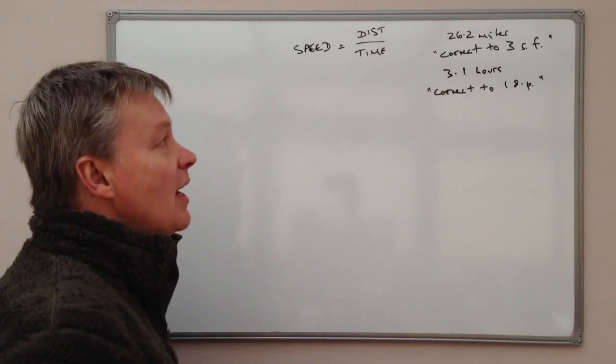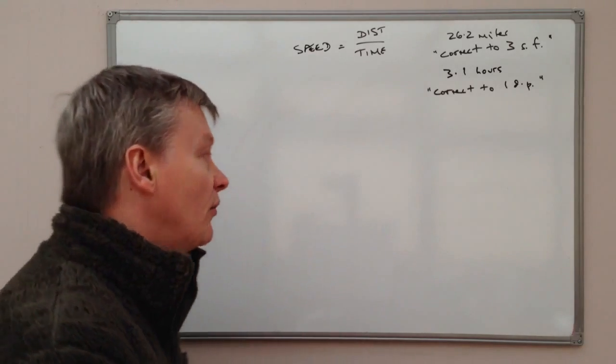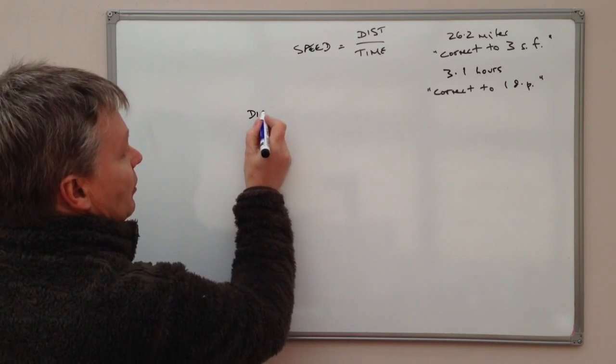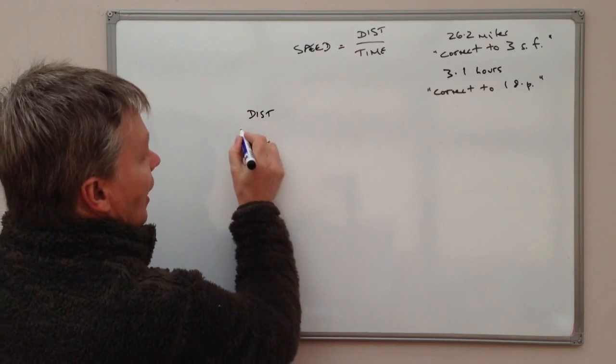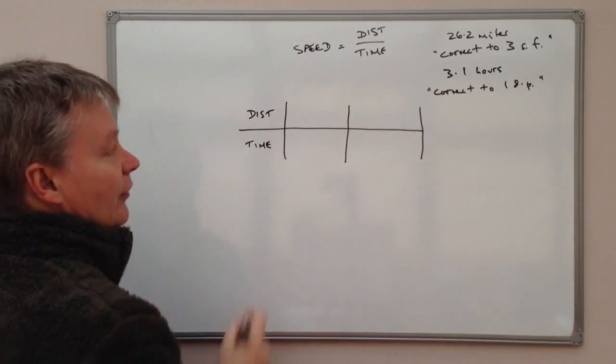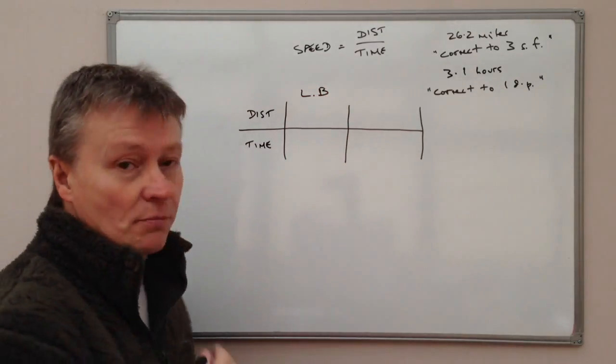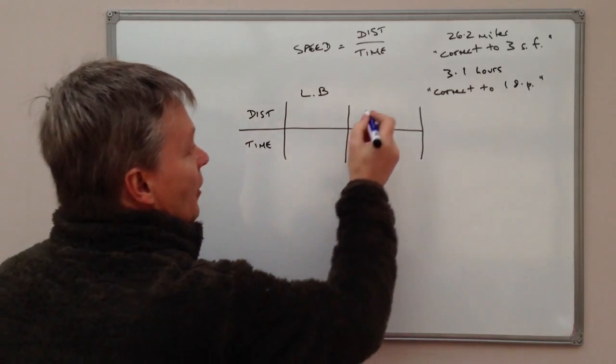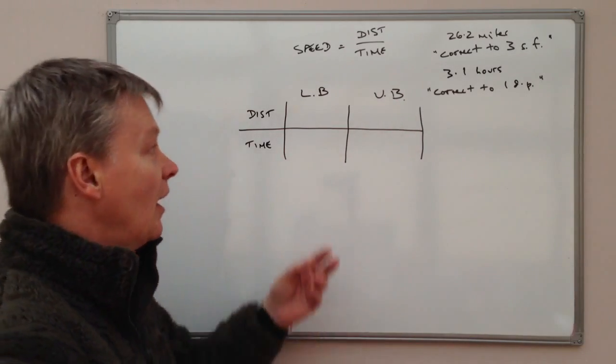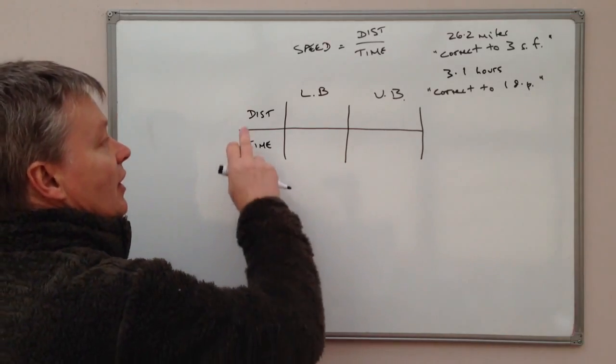And what the question is asking you to do is to find the longest possible time that it's going to take Sarah to complete the marathon. So perhaps the easiest way of answering this question is to use a chart. So what I'm going to do is I'm going to put distance here and time here. And we're going to get two values of each. In other words, we're going to get a value for distance, which is the least possible value, and we're going to call that the lower bound or the smallest possible boundary. We're also going to get the upper bound. And that's the same with the time value. We're going to get the least value of time and the most value of time or the longest possible time when it's correct to one decimal place.